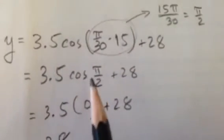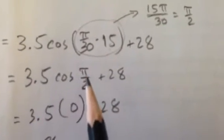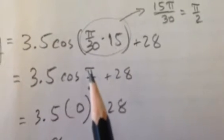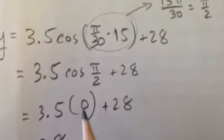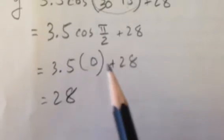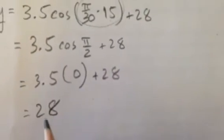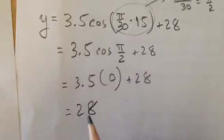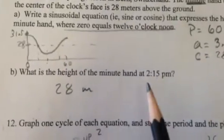So it's 3.5 times the cosine of pi over 2. Cosine of pi over 2 is 0. So that's 3.5 times 0, which of course is 0. Which then this 28 is just kind of sitting there. And that's all you got left. So yeah, it's 28 meters above the ground at 2:15.